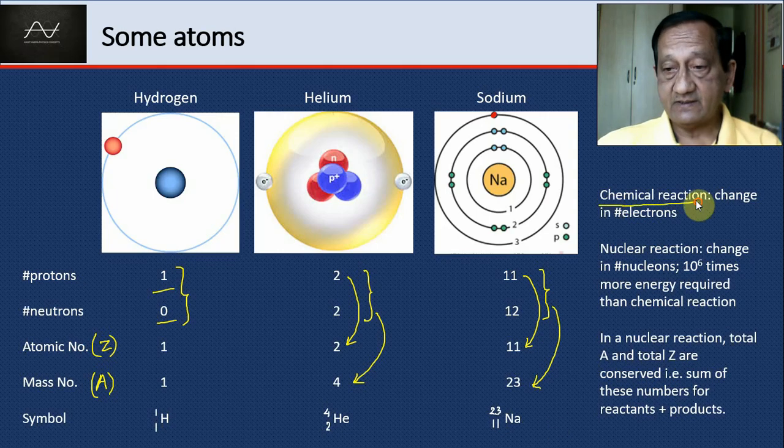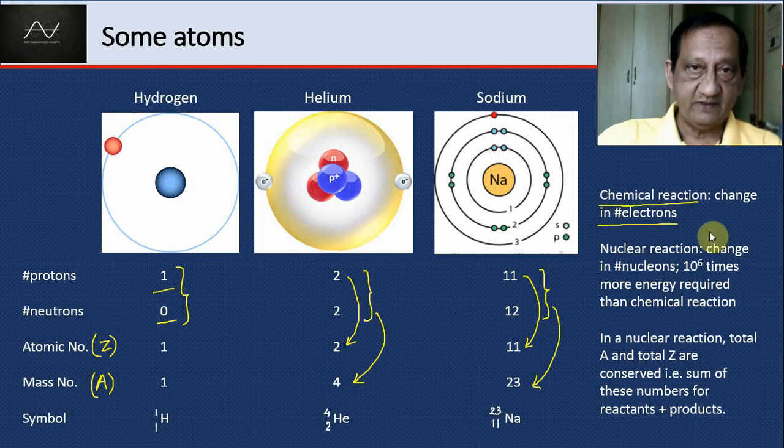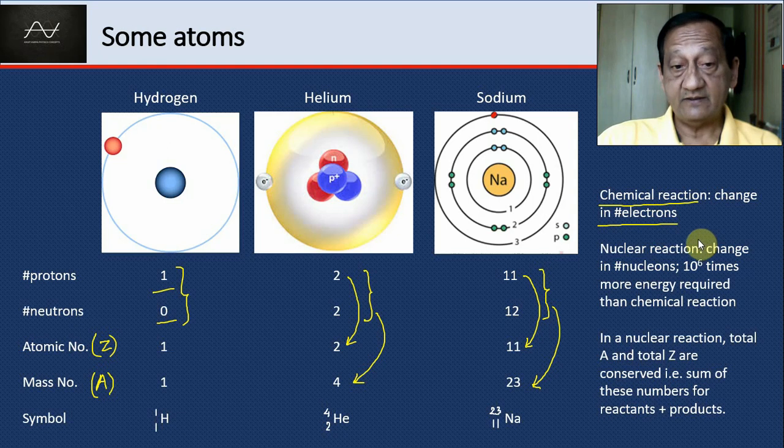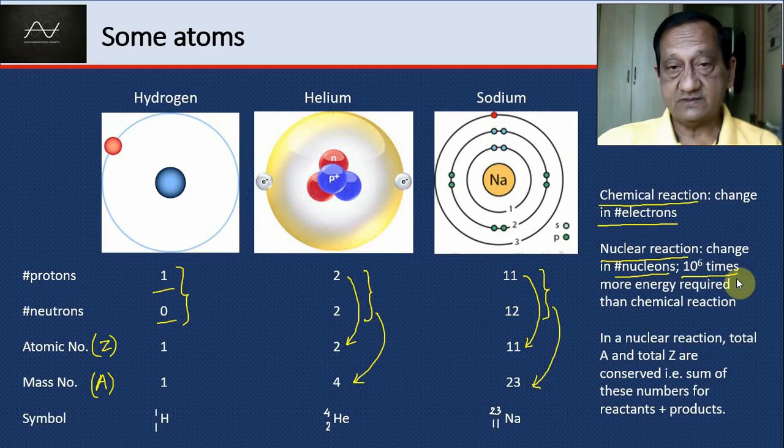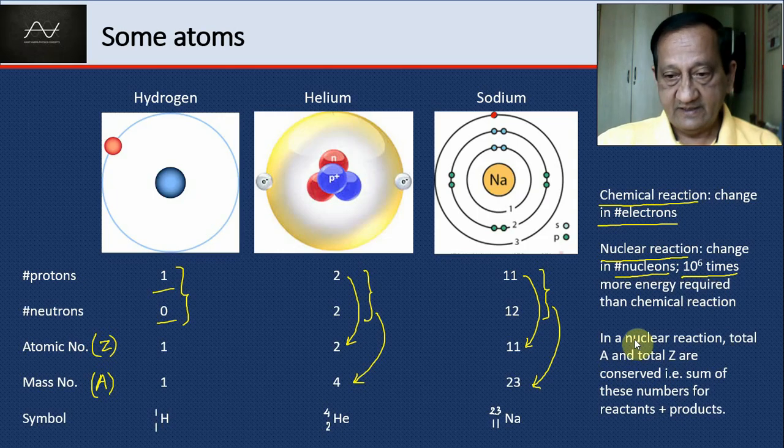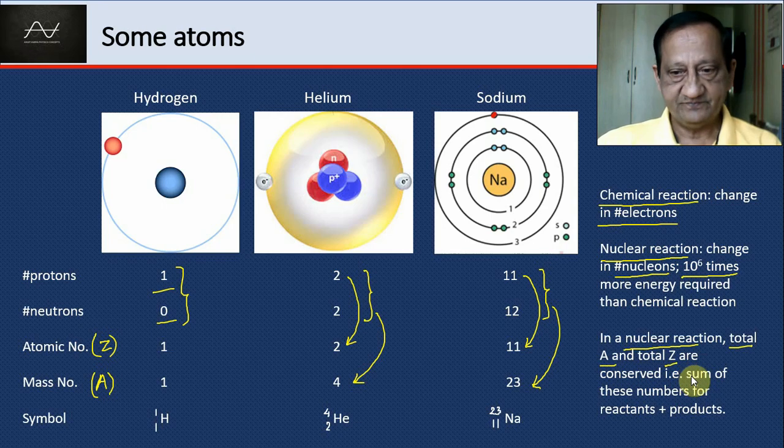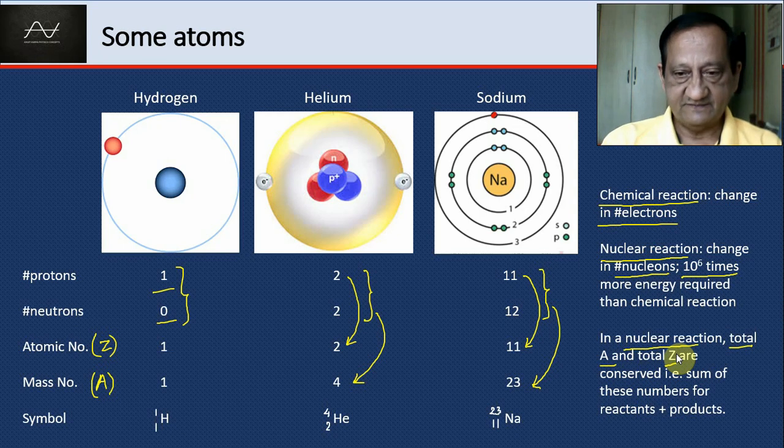In a chemical reaction, it's a change in the number of electrons—a reaction at the electronic level, not nuclear. But in a nuclear reaction, the change is in the number of nucleons, and the energy required or released is a million times more than in a chemical reaction. In a nuclear reaction, the total A and Z before and after are conserved.